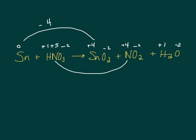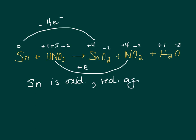Tin has lost four electrons and nitrogen has gained an electron. So tin is oxidized and it is the reducing agent. Nitrogen is reduced, and we say HNO3 — the entire substance — is the oxidizing agent.